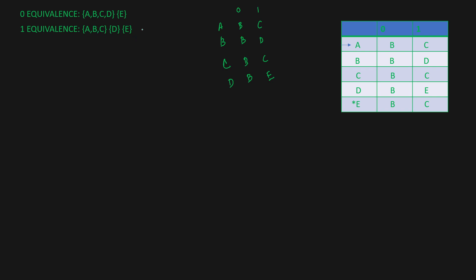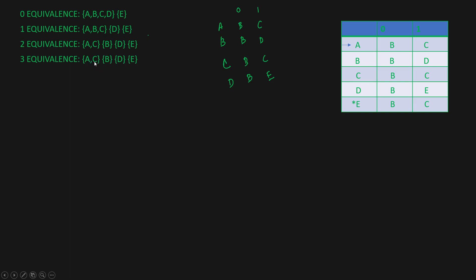For two equivalence, we compare A and B again. On input 0 both output B; on input 1, A outputs C and B outputs D. C and D are not in the same set in the one-equivalence grouping, so A and B are not two equivalent — B gets its own new set. A and C are two equivalent because for input 0 both go to B and for input 1 both go to C, the same outputs. When we check three equivalence and get the same sets back, we stop.